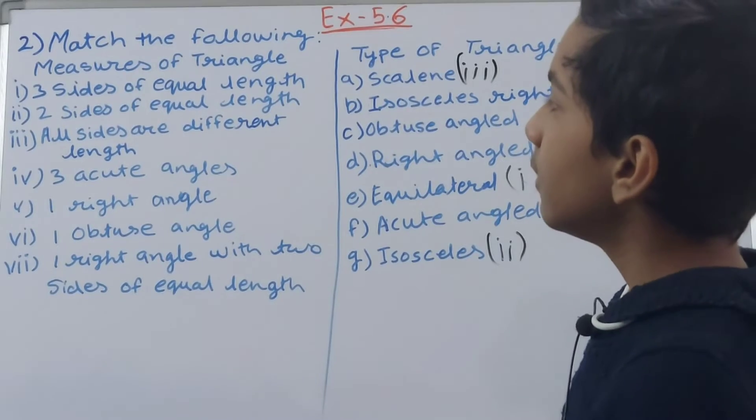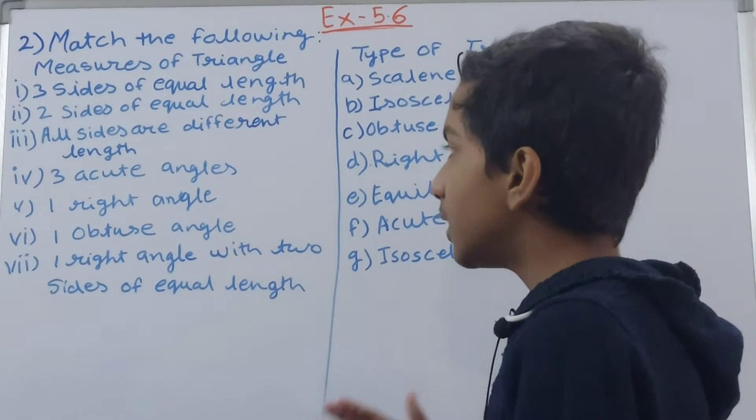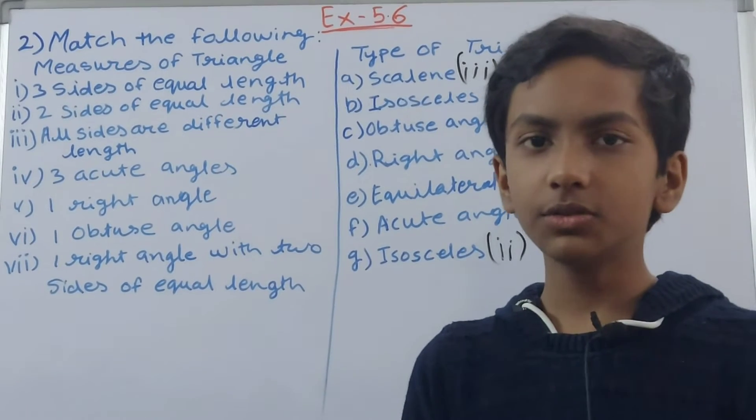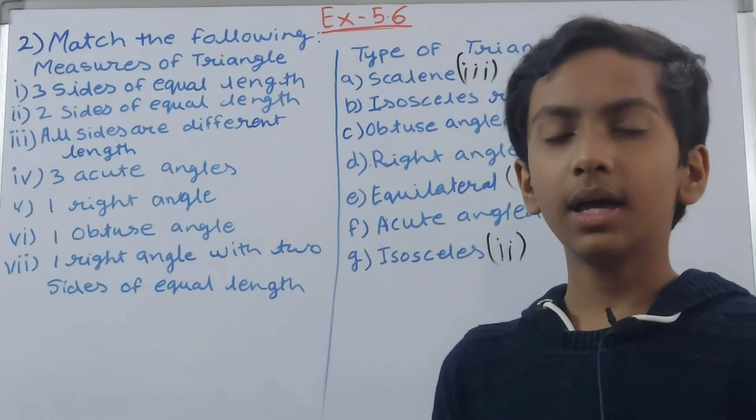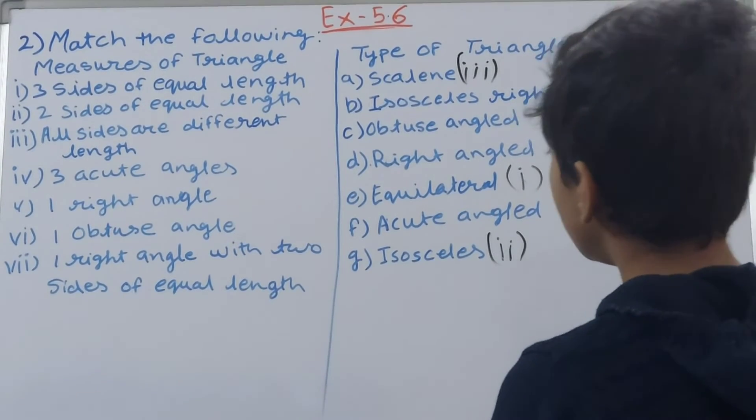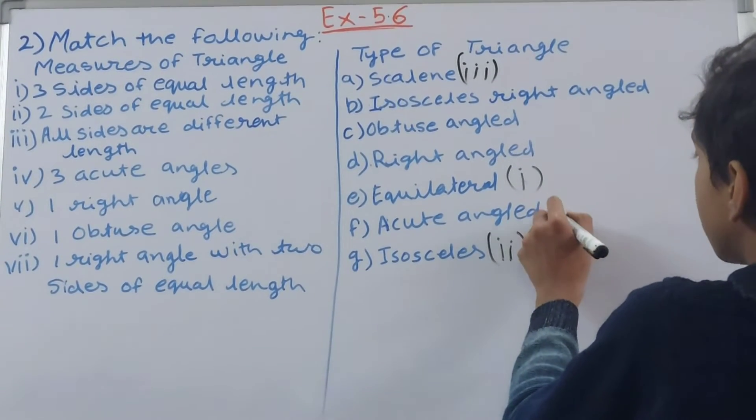Then come to the angles. Three acute angles. Whenever there are three acute angles out of all the three angles in a triangle, that is an acute angle triangle. So over here we have acute angle, so you can write four over here.